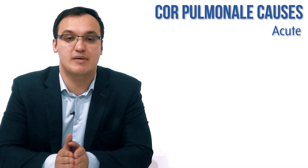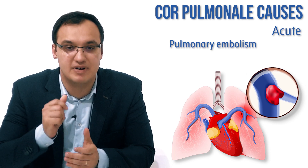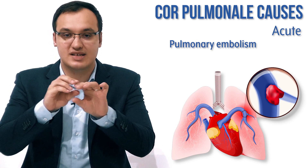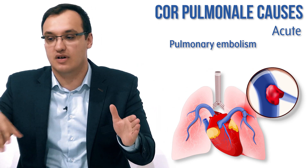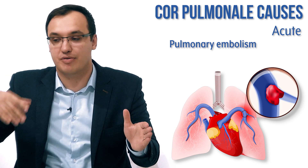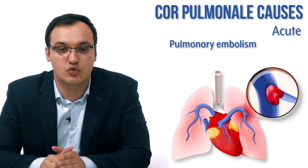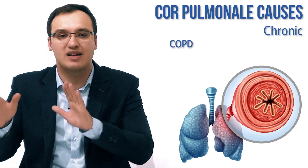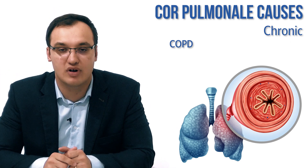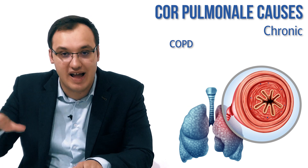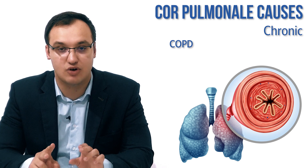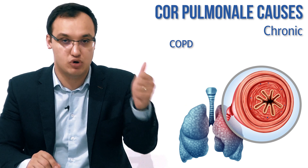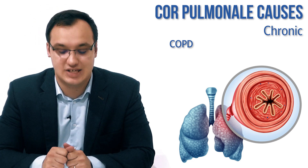Acute causes include, for example, pulmonary embolism — this happens very quickly. Acute refers to something fast, whereas chronic refers to a longer period of months or years. If it's acute, it's usually pulmonary embolism. If it's chronic, it's usually COPD. These are the two main diseases you need to remember for cor pulmonale: acute for pulmonary embolism, chronic for COPD.